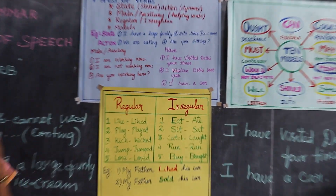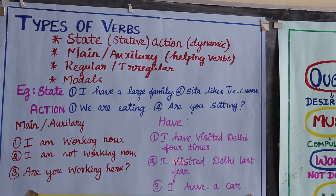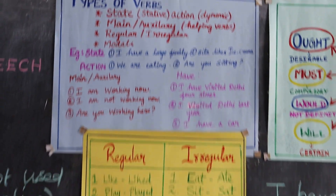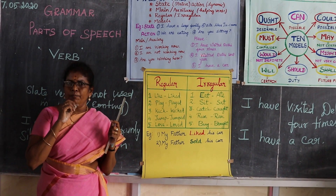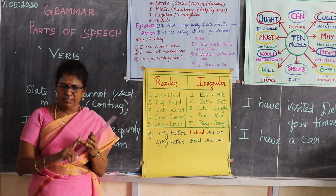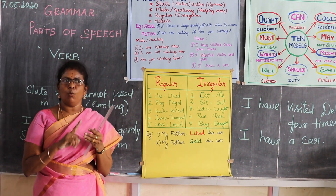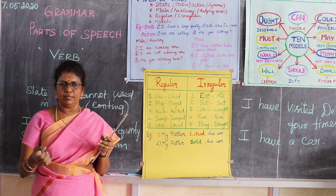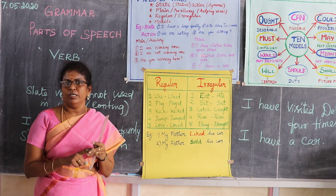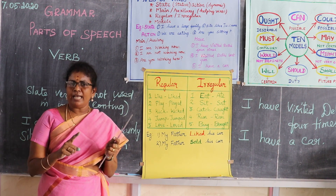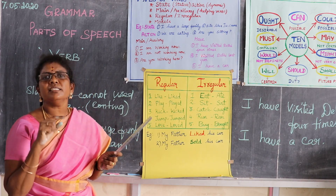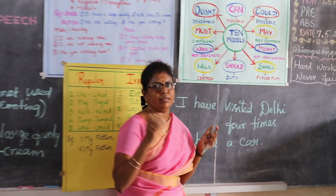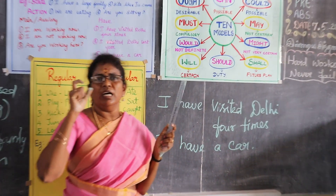The last category is modals. We have already studied 24 auxiliaries: out of these, 11 are auxiliary verbs — am, is, are, was, were, do, does, did, have, has, had — and 13 are modals. Of the 13, ten are simple modals and three are semi-modals.